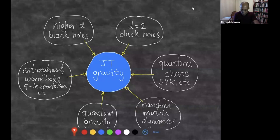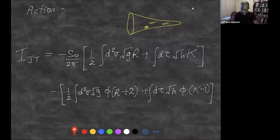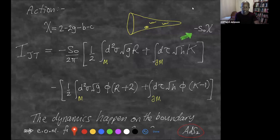Let me remind you a little bit about Jackiw-Teitelboim gravity. The action can be written like this. I have in mind some model which could include, when thinking about higher topologies, not just orientable but also unorientable surfaces — symbolically represented by a cross-cap insertion in addition to handle insertions. The action looks like this. S_0 can be thought of as the ground state entropy of the black hole. This model arose by reduction from higher dimensions.